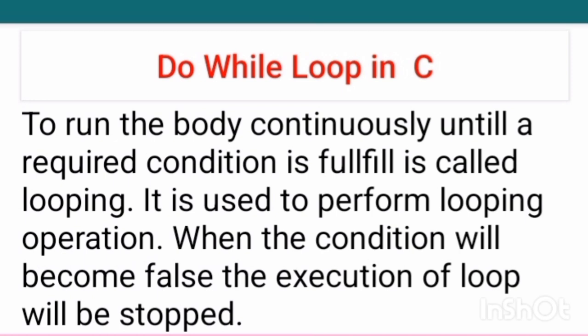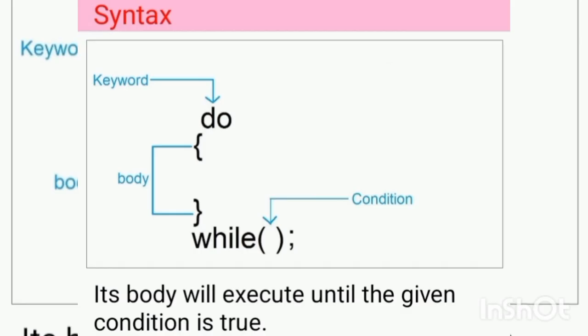It is used to perform a looping operation. When the condition becomes false, the execution of the loop will stop. The syntax shows the do keyword, followed by the body, then the while keyword and the condition.